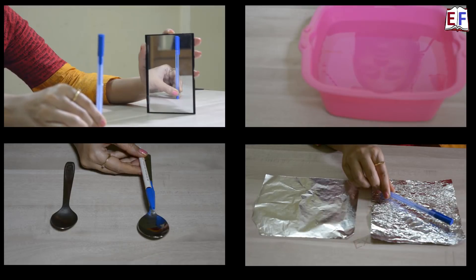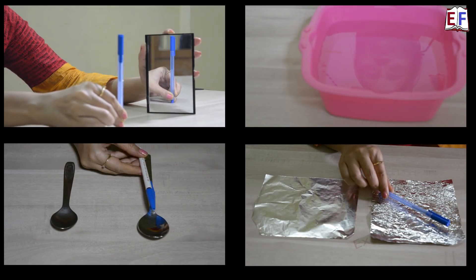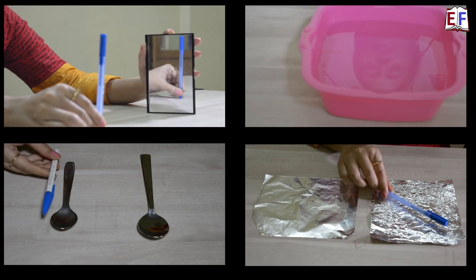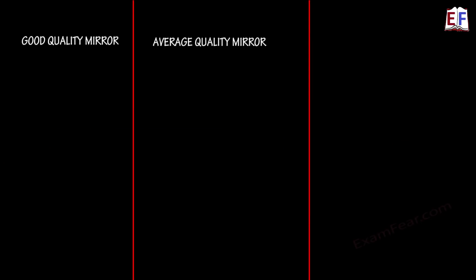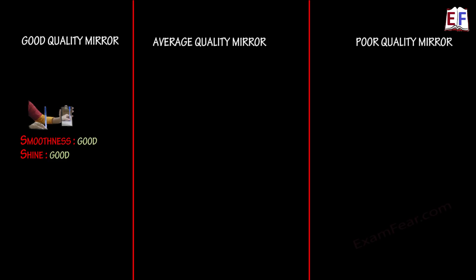Based on the experiments we can categorize all these objects into three classes: good mirror, average mirror, and poor mirror. The mirror we normally use as a dressing mirror behaves like a good mirror because it has a perfectly smooth and shiny surface.